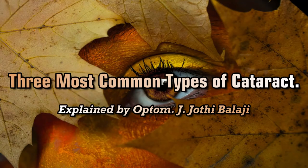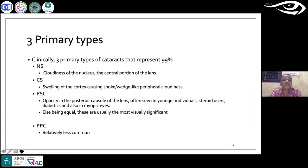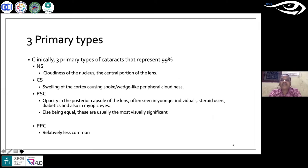I'm going to pay attention to only the top four — probably the top three — which account for nearly 99 percent. The bottom one, PPC, that is your posterior polar cataract, is relatively rare but it is equally important to know.